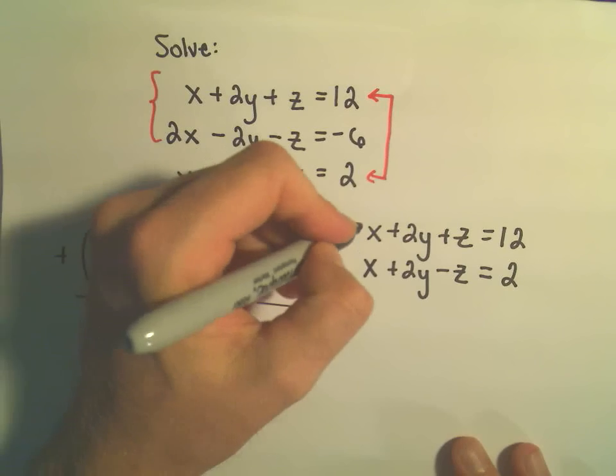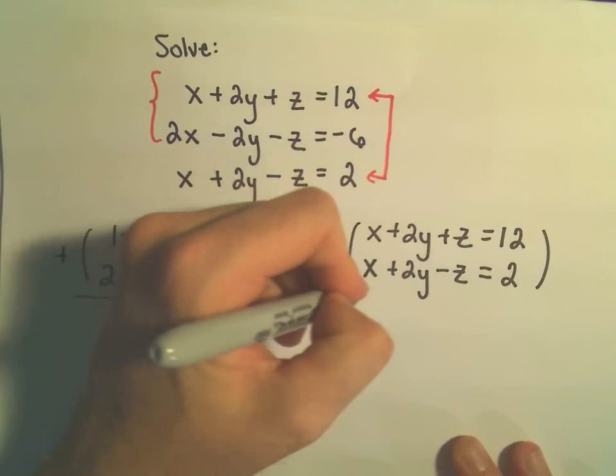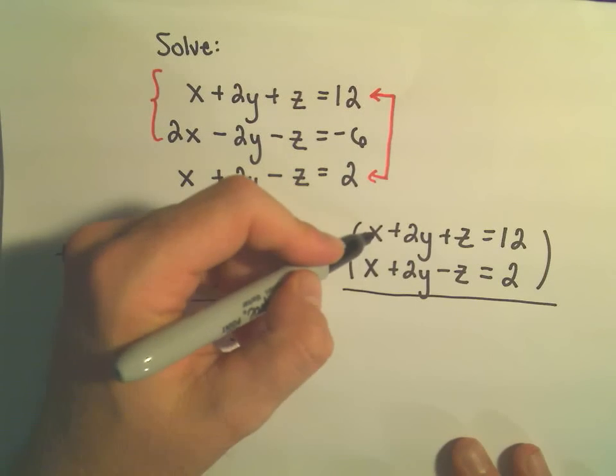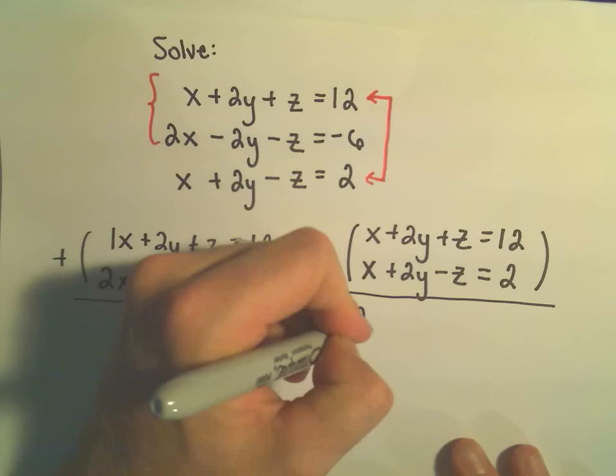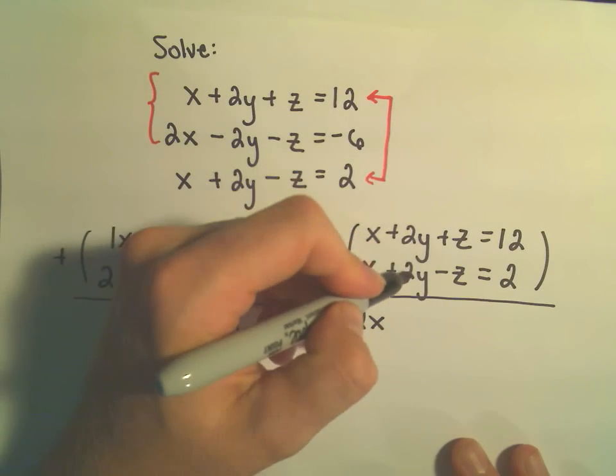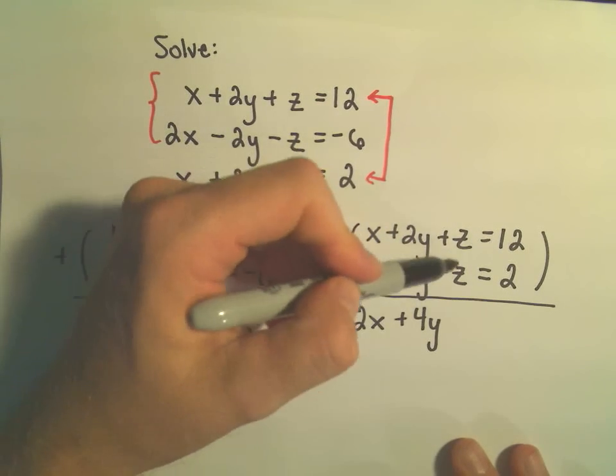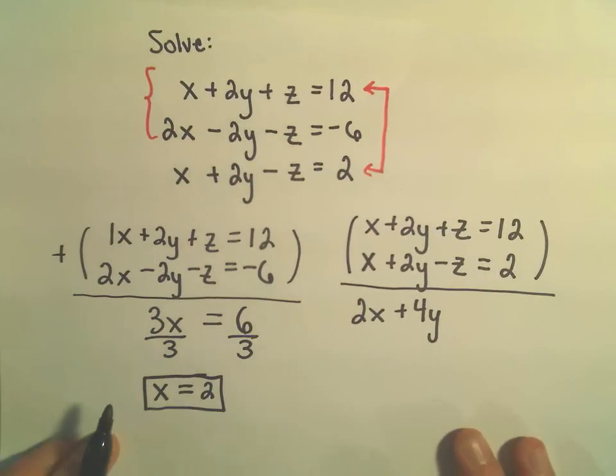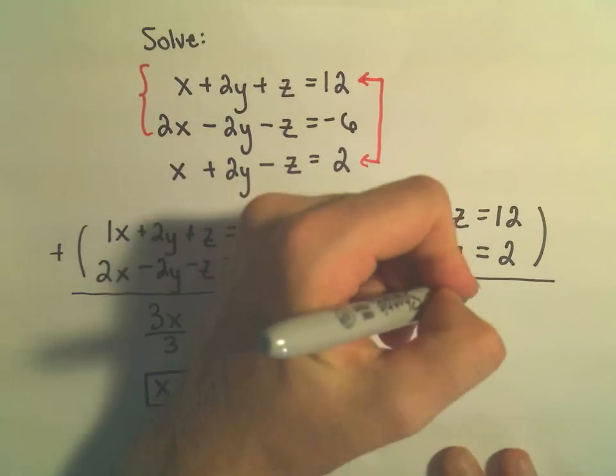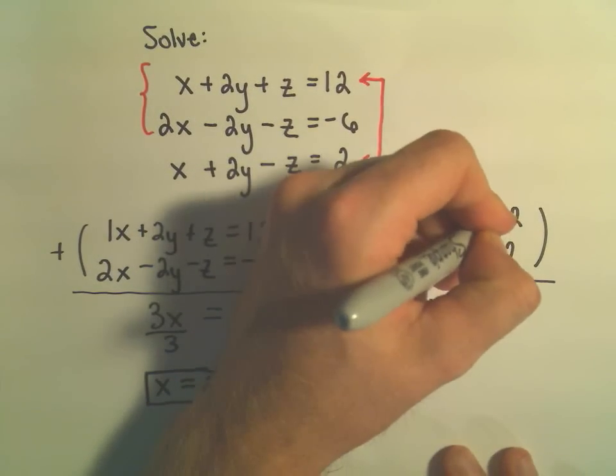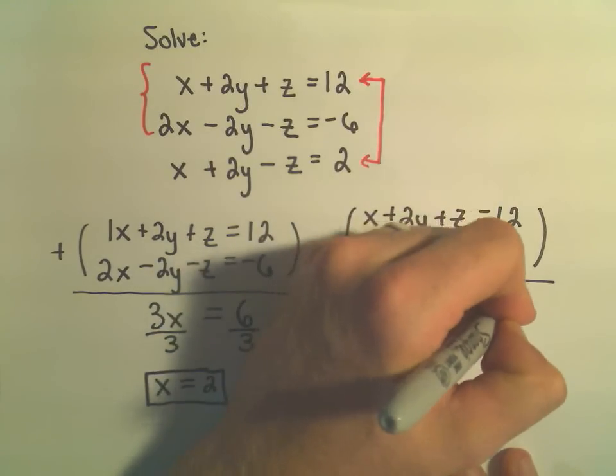And again, I'm just going to add these two equations together. Well, 1x plus 1x would be 2x, 2y plus 2y would be 4y. Notice the z's have canceled out, positive z minus z will be 0z. And then we have 12 plus 2, which is going to be 14.